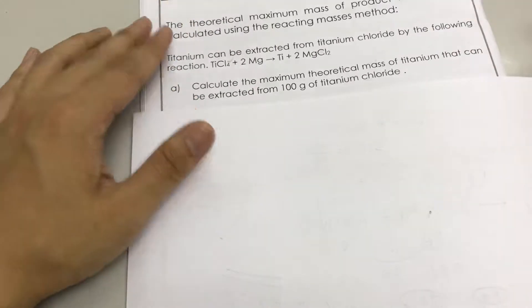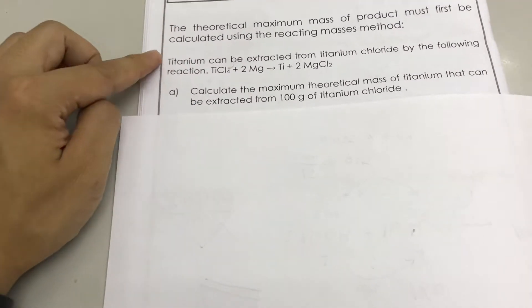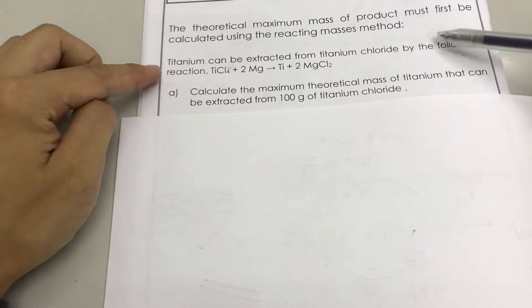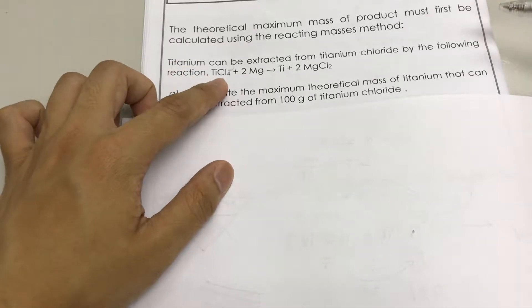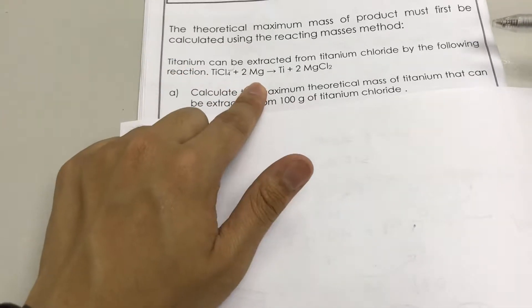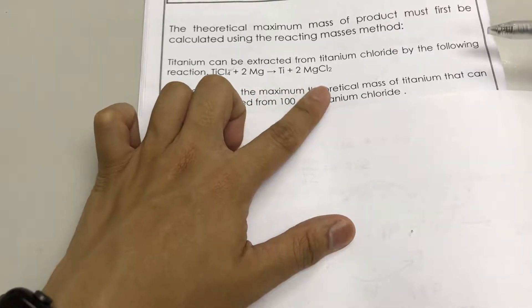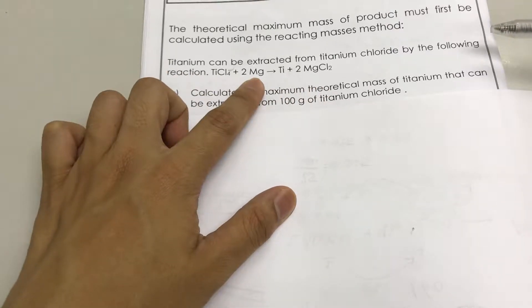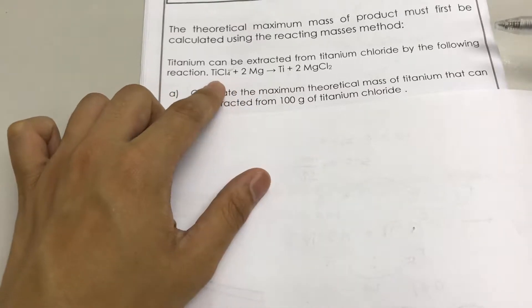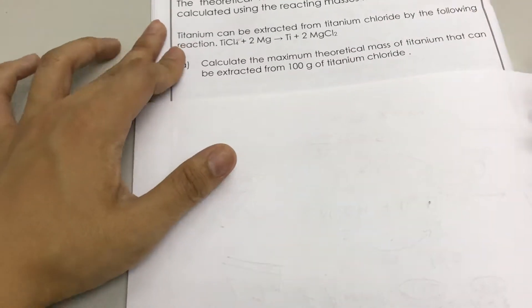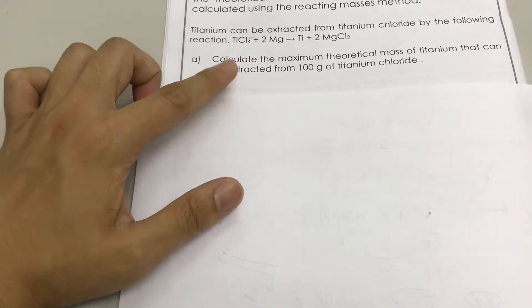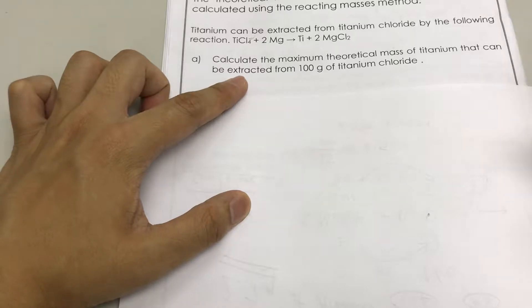We have a context: titanium can be extracted from titanium chloride by the following equation. Titanium chloride with two magnesium becomes titanium plus two magnesium chloride. You can see that magnesium is more reactive; it was able to snatch away the chloride atoms or ions. Calculate the maximum theoretical mass of titanium that can be extracted from 100 grams of titanium chloride.